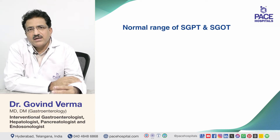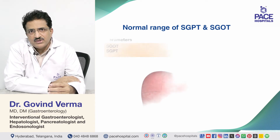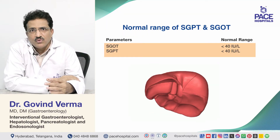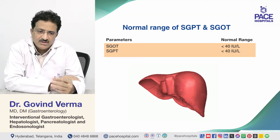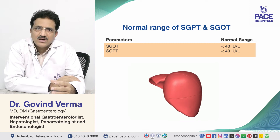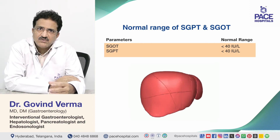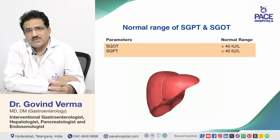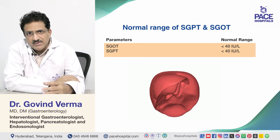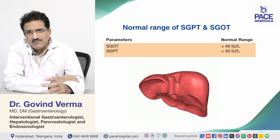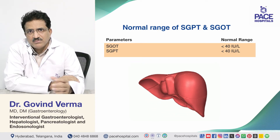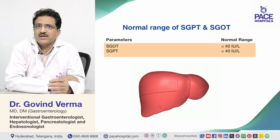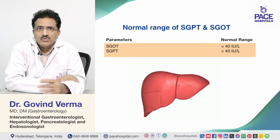The normal range for these two parameters is usually below 40. Recent guidelines suggest that SGPT more than 35 is considered elevated. The normal range may vary depending on whether the patient is male or female, but generally a normal value is below 35 to 40.